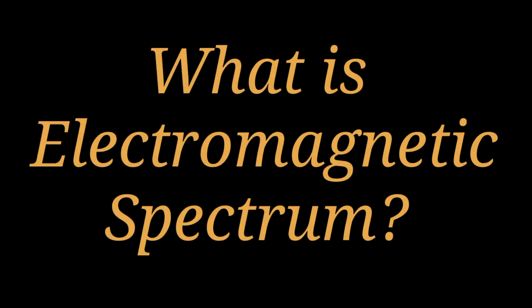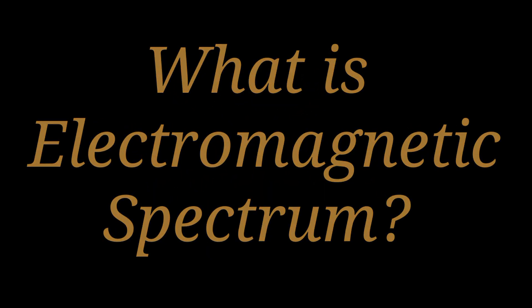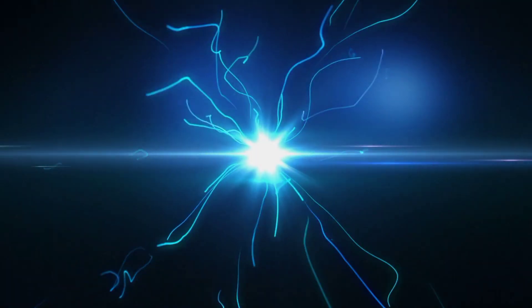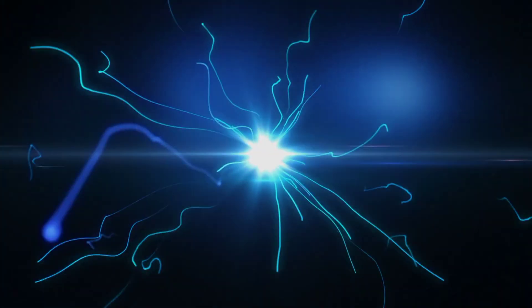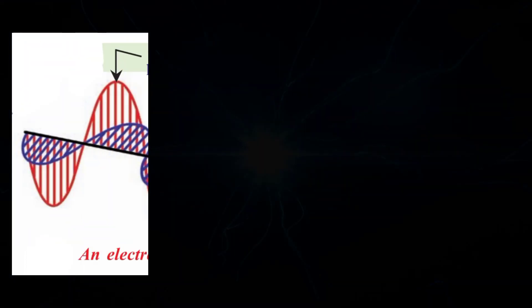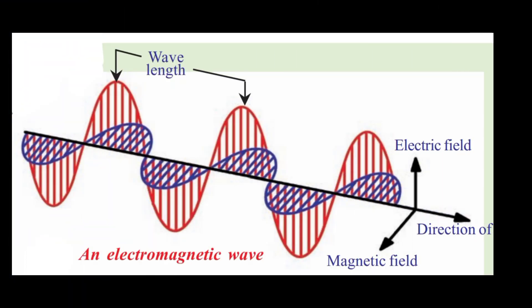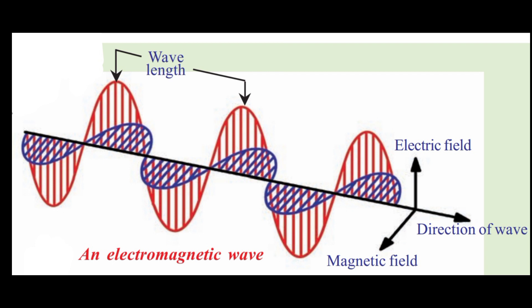What is electromagnetic spectrum? A vibrating electric charge creates a change in the electric field. The changing electric field creates a changing magnetic field. This process continues with both the created fields being perpendicular to each other and at right angles to the direction of propagation of the wave.